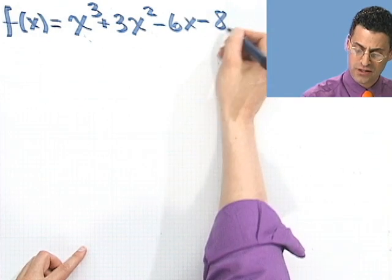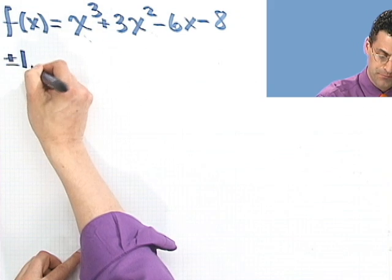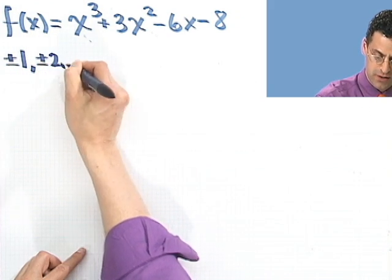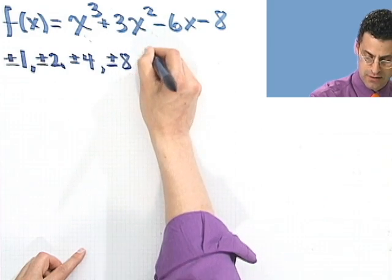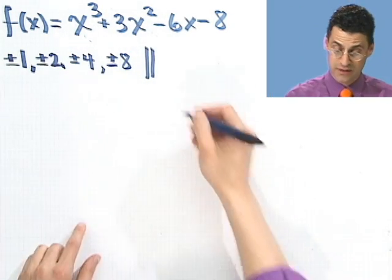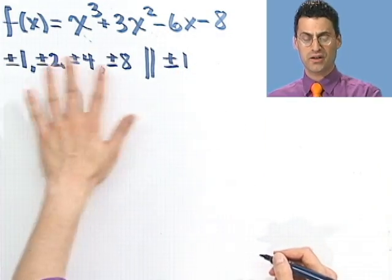So the candidates would be what? Well, you factor, look at all the factors of the -8, which would be ±1, ±2, ±4, and ±8. And now look at all the factors of 1. That's pretty easy, actually, ±1.